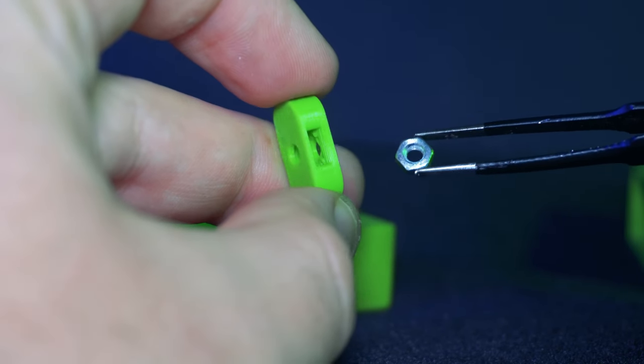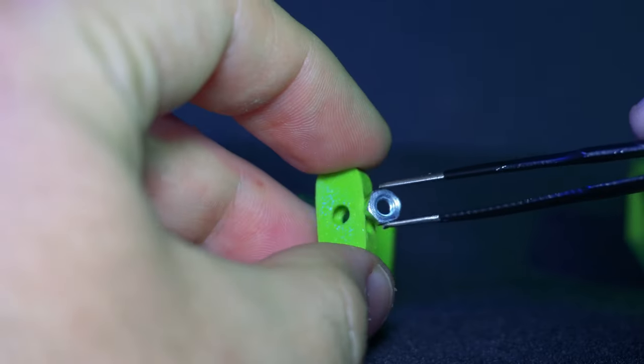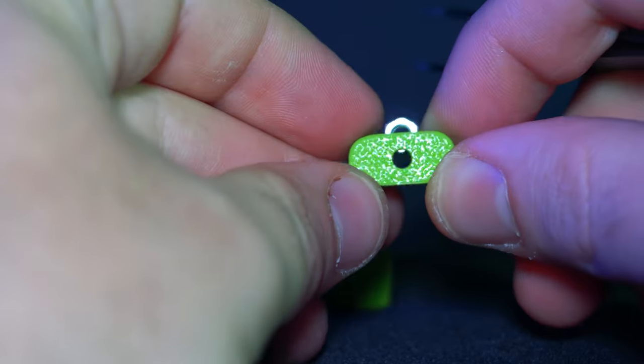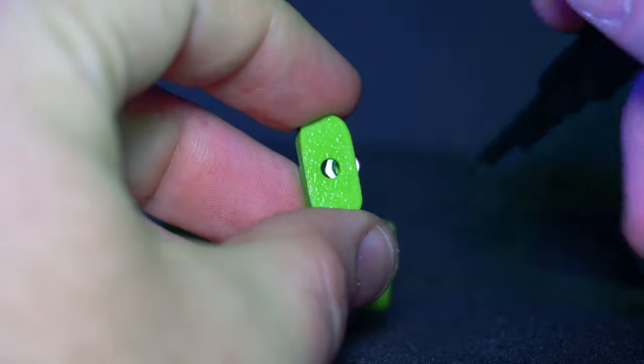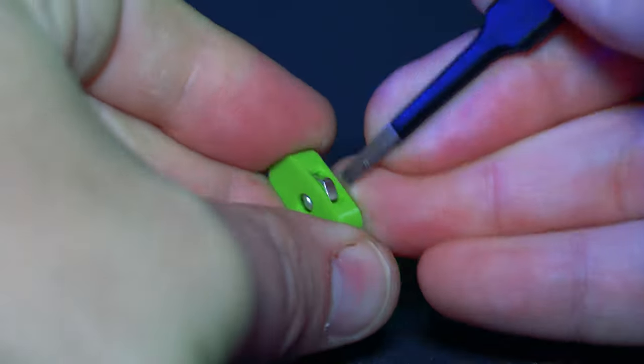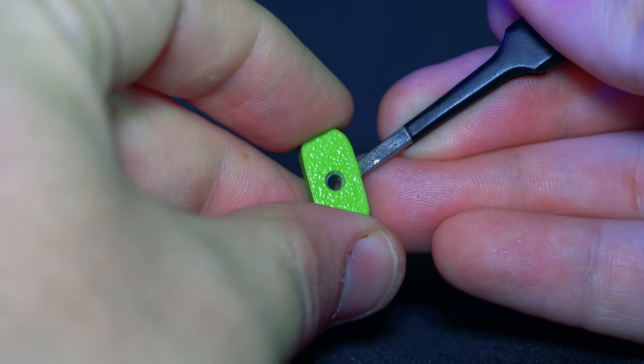Next we need to place the knot in this hole. Use the tweezers to push in the knot. It should look like this.